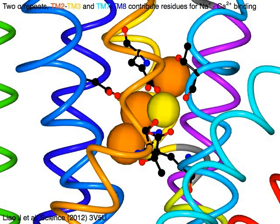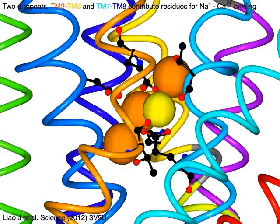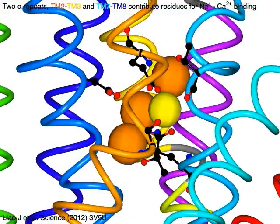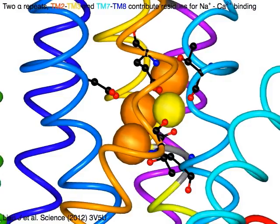Two alpha repeats, orange TM-2 to yellow TM-3, and cyan TM-7 to blue TM-8 contribute residues for sodium binding.